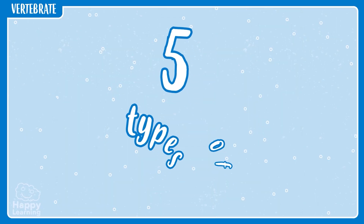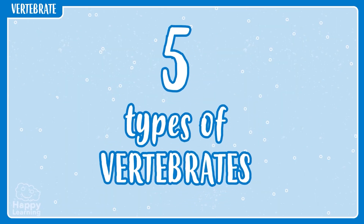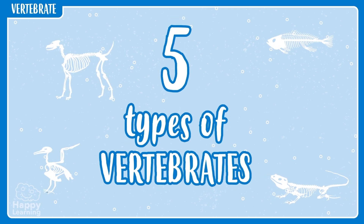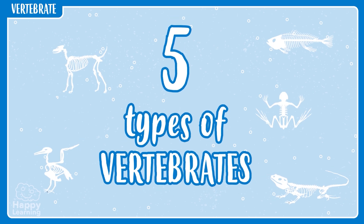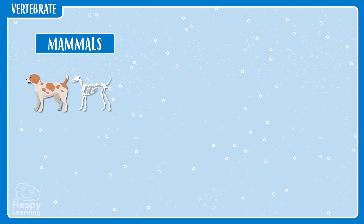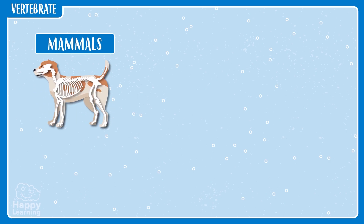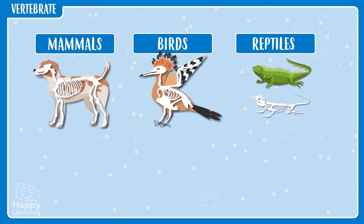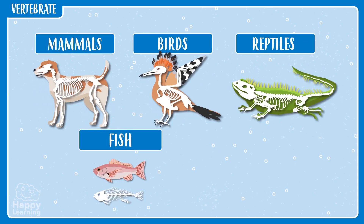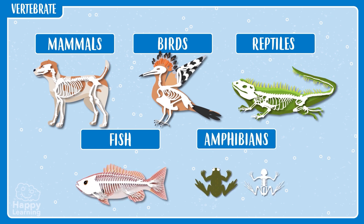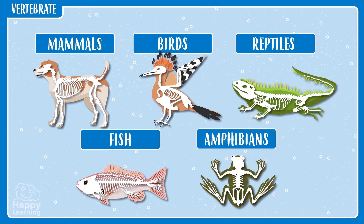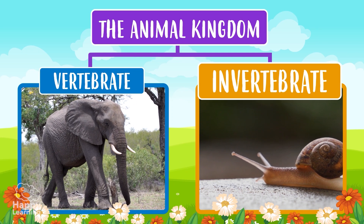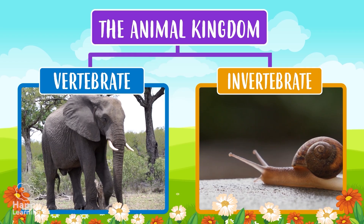Remember, there are five types of animals that have bones — five types of vertebrate animals: mammals, birds, reptiles, fish, and amphibians.